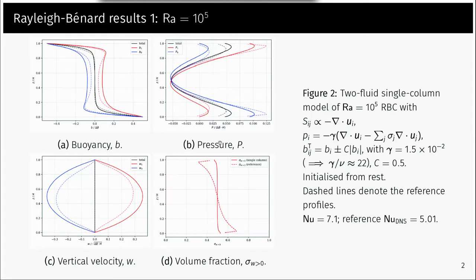The Nusselt number of the flow is a measure of the total heat transport. The two-fluid model predicts a Nusselt number of 7.1, whereas the reference model, resolved model, predicts a Nusselt number of 5.01.